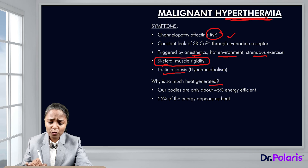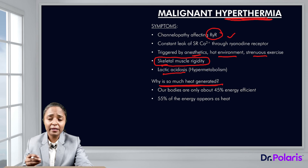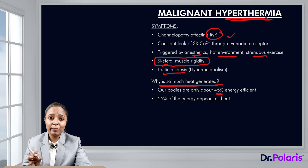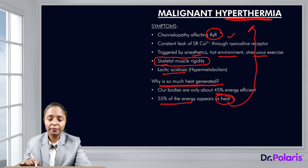Why is so much heat generated? Calcium is released into the sarcoplasm causing cross-bridge cycling. Whenever ATP is utilized, the process is only 45% efficient, meaning 55% of the energy appears as heat. This causes the hyperthermia.